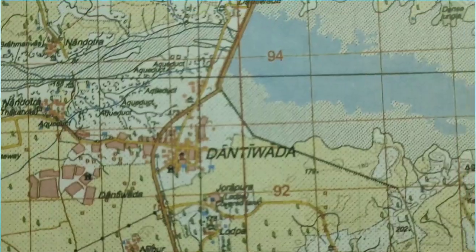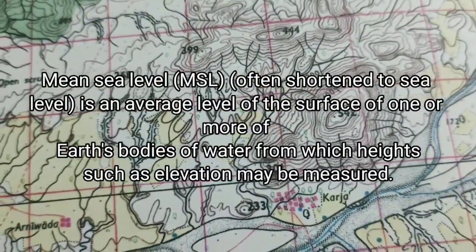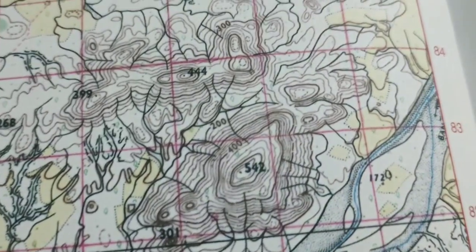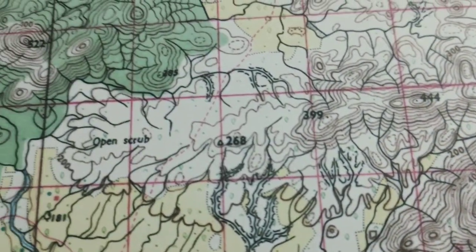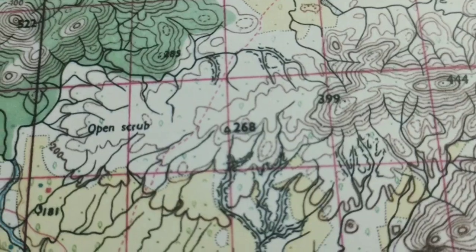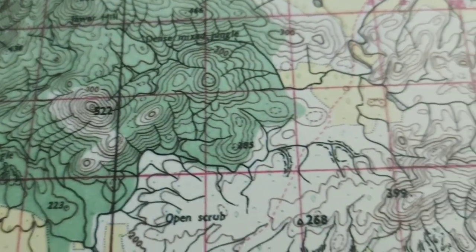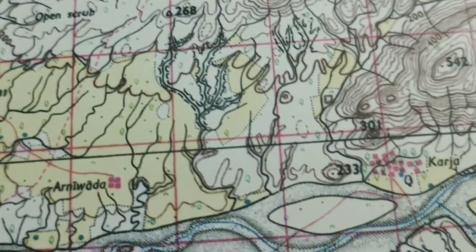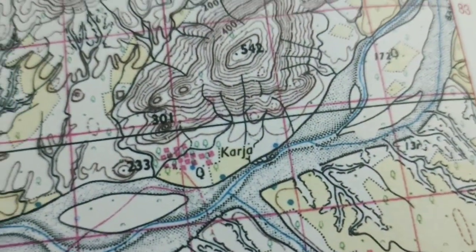Spot height gives information about the height of a specific point only. It never gives you an idea about what type of relief feature it is — whether it is a mountain, a plain, or a plateau. It only says that this particular place has got some elevation, and that height is such and such above mean sea level. That is why it is shown only on the map.